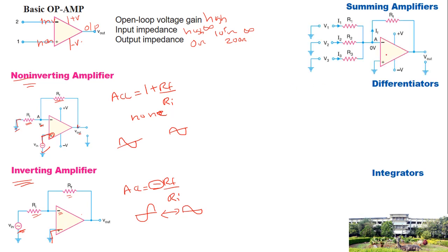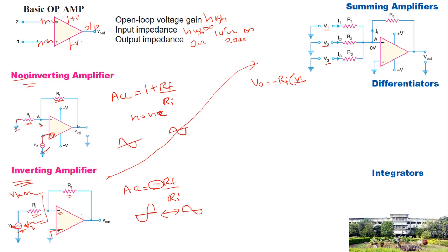A summing amplifier is a modification of the inverting amplifier. Instead of a single input resistance, more than one resistance and voltage source are used. With inputs V1, V2, and V3, the output expression is: Vout equals minus Rf times (V1/R1 + V2/R2 + V3/R3). This expression must be remembered for solving numerical problems in examinations.